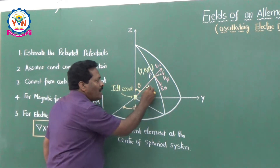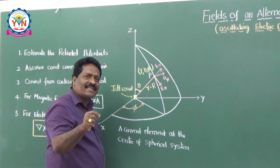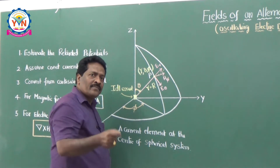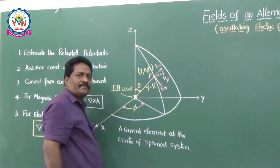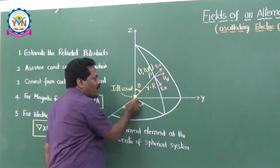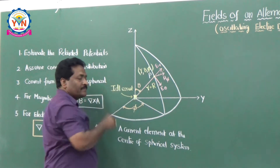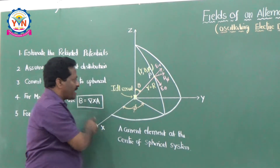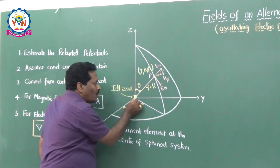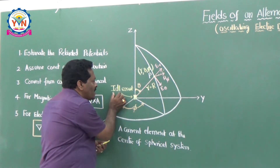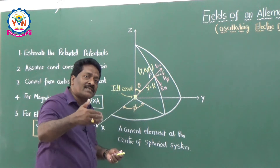In this case, r is equal to capital R because in the last class we took distances with respect to the origin, but now the source itself is at the origin, that is why small r is nothing but capital R here. So the observation point is at a distance r from the center, making an angle theta with the z-axis and an angle phi with the x-axis. So the current element is at the center, and I have taken the smallest current element possible where I can assume constant current distribution.